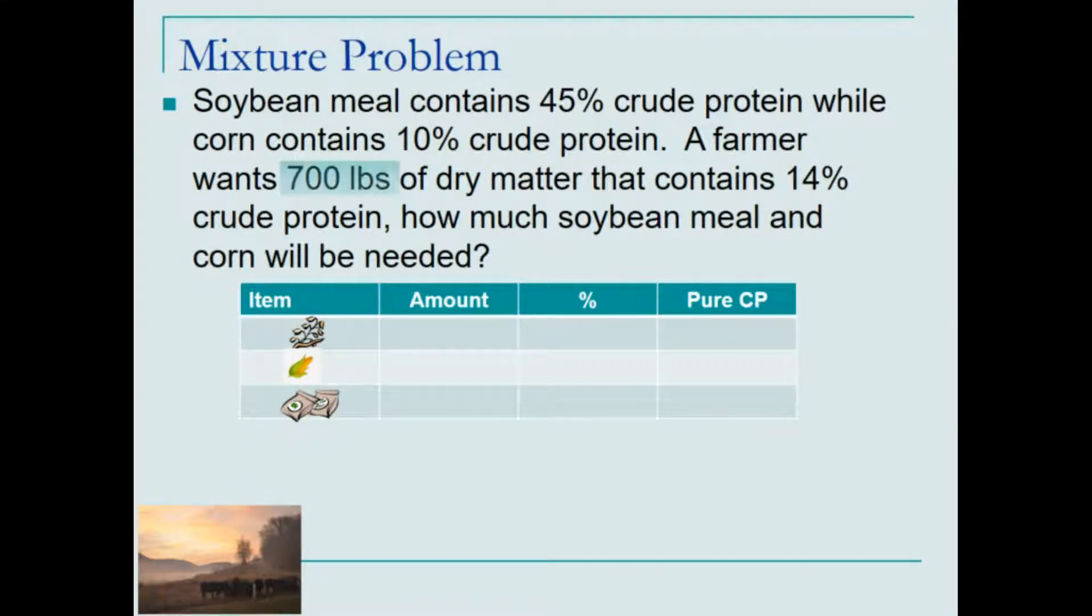Using the information from the problem, it tells us that the combination of these two items will result in 700 pounds. We don't know how much soybean or corn was used, so we'll let variables stand for the weights of each of these: S for soybeans and C for the pounds of corn used in this mixture.